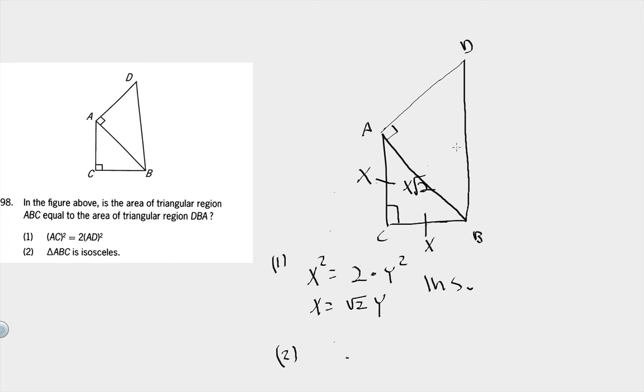But let's use some distortion. Let's see if we can change this triangle while keeping this triangle the same. We can make this triangle smaller, we can make this triangle bigger. There are infinite ways that we can vary this triangle while not changing this triangle at all. And because we can do that, statement 2 is insufficient.